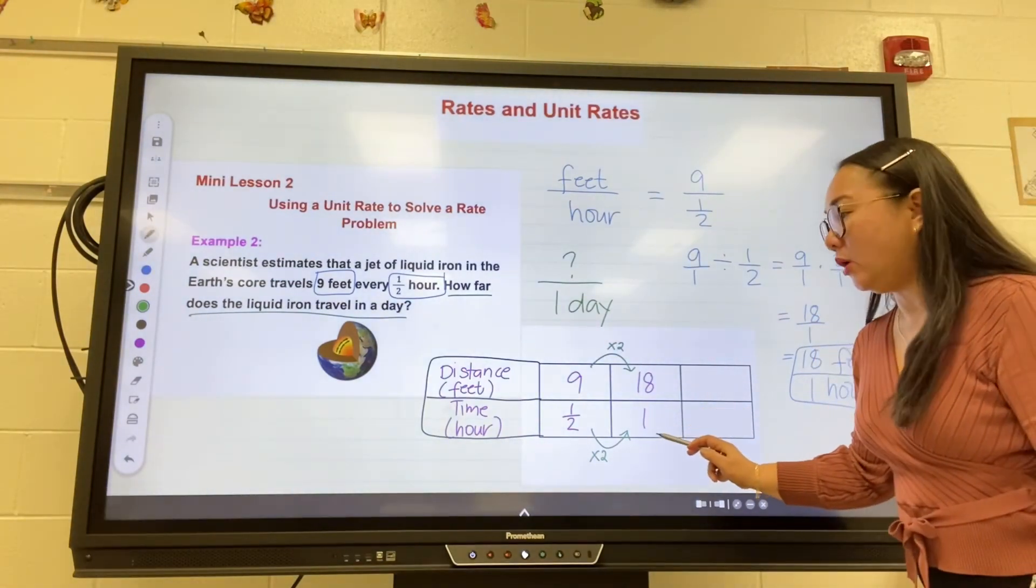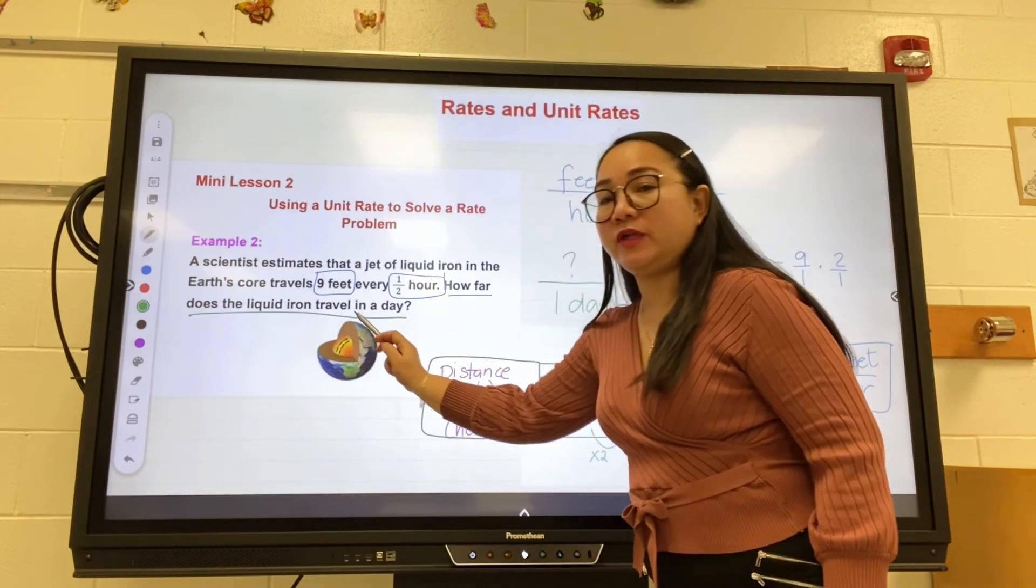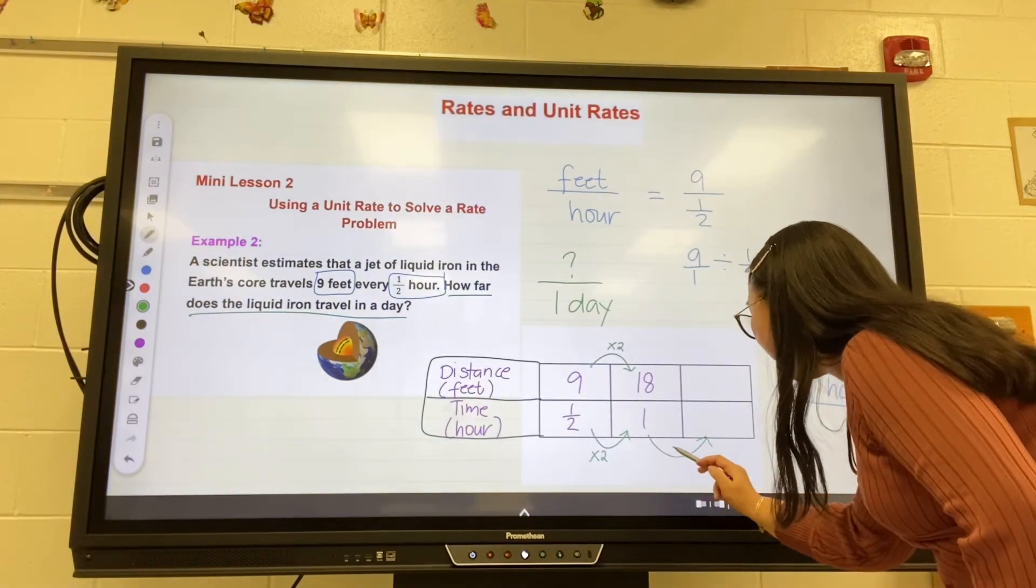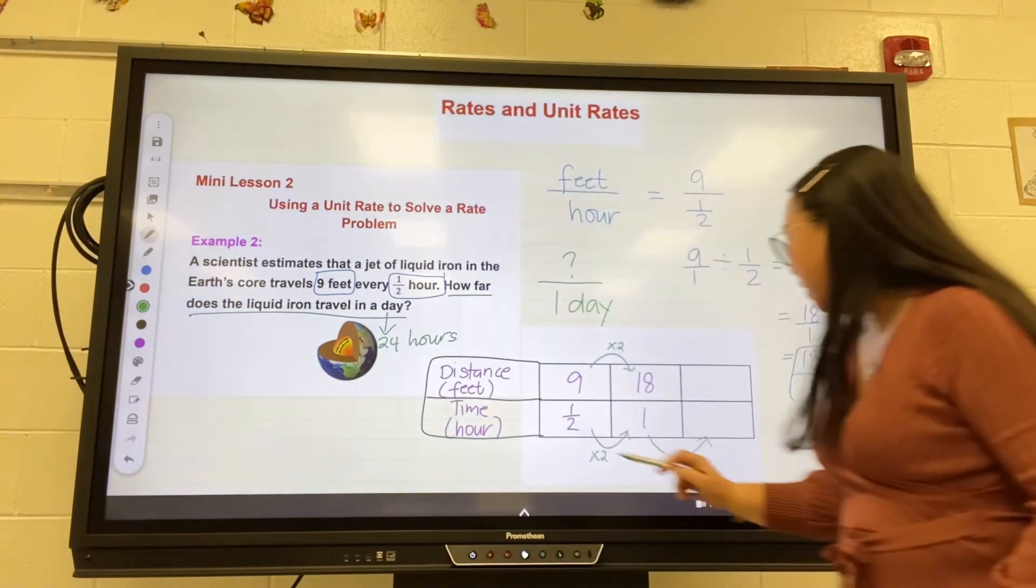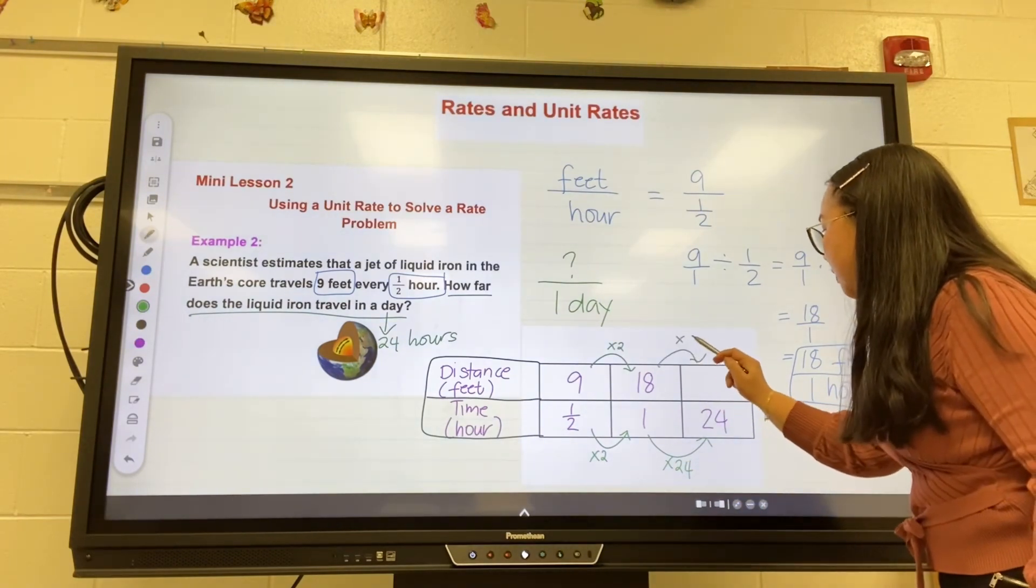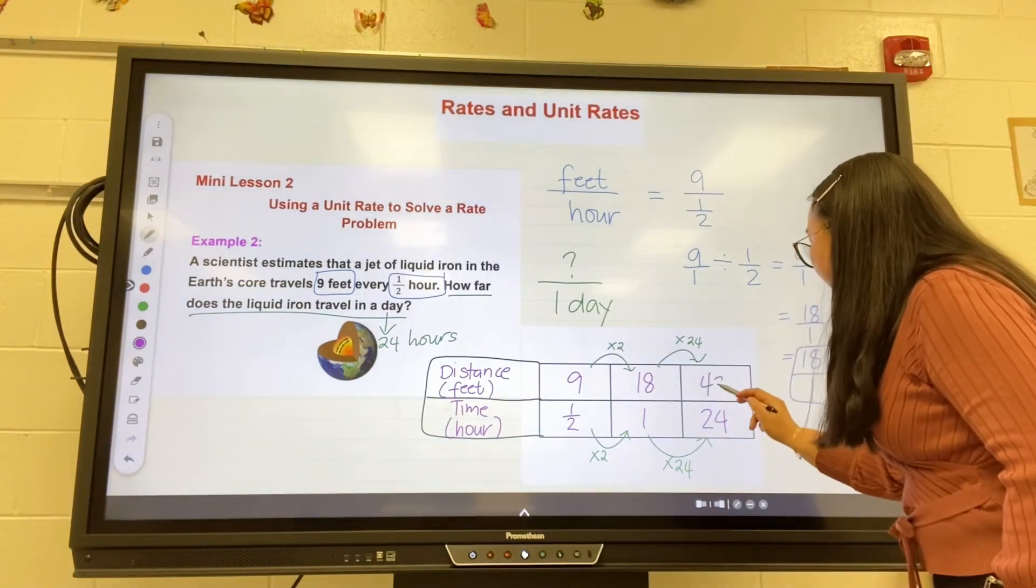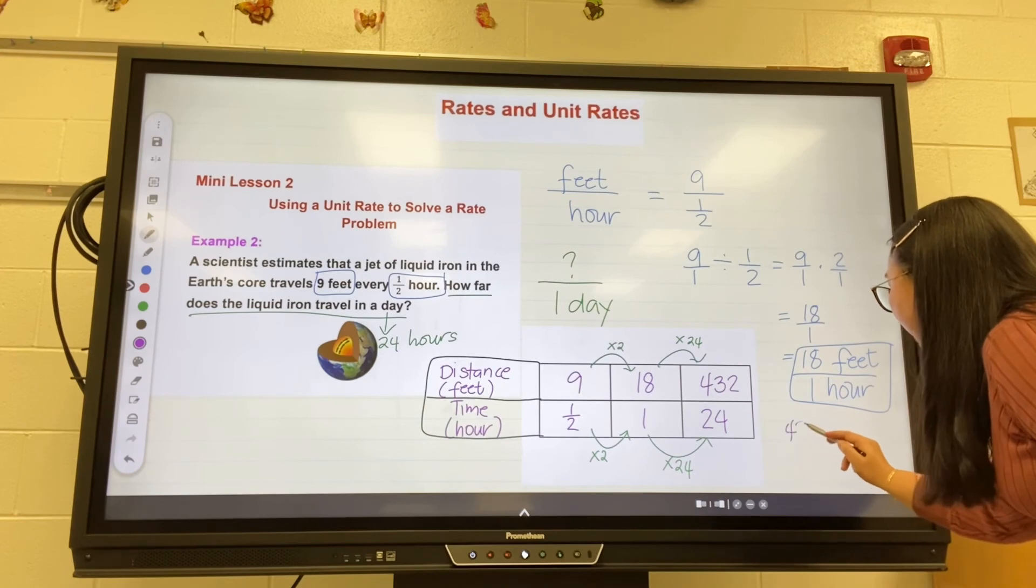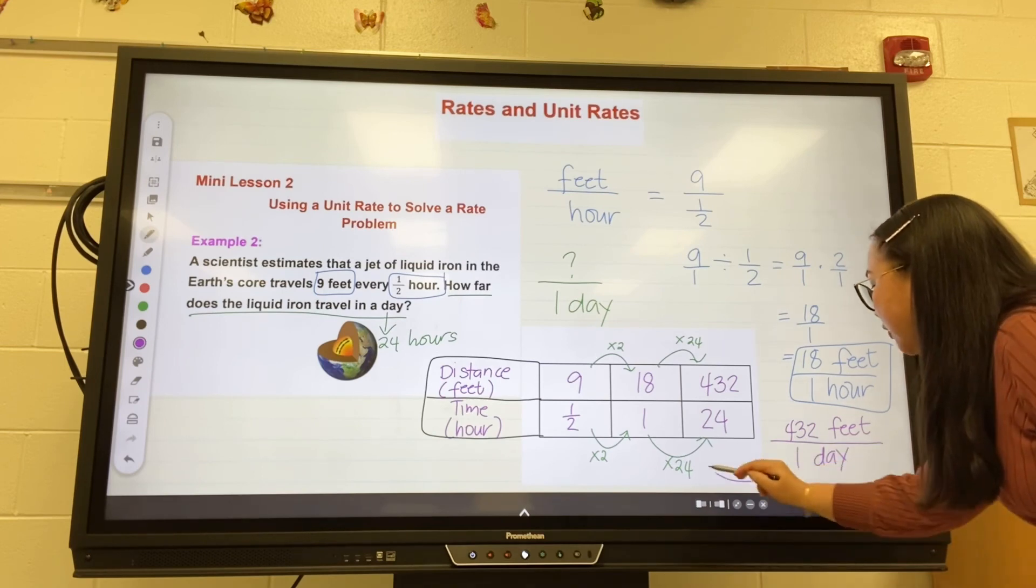Now look at this: This is one hour only, so the liquid iron travels eighteen feet for one hour. The question is: How far does the liquid iron travel in a day? We all know that in one day there are twenty-four hours. So that means multiply this by twenty-four, which is equivalent to one day - one day is twenty-four hours. One times twenty-four is twenty-four, so whatever you do here, do the same thing on the top: times twenty-four. Eighteen times twenty-four is four hundred thirty-two. This means the liquid iron travels four hundred thirty-two feet in one day, which is twenty-four hours.